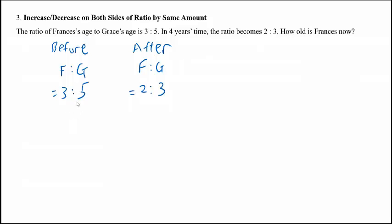So in this case, 5 minus 3. The difference between Francis and Grace is 2 units.